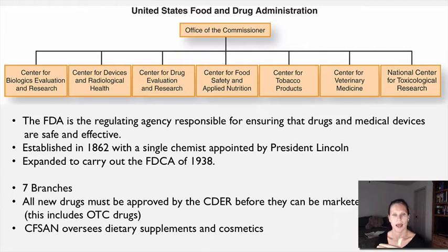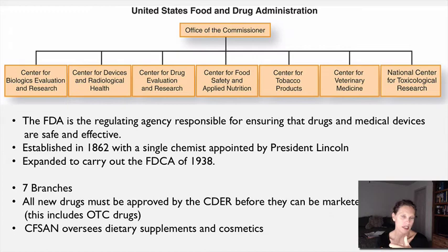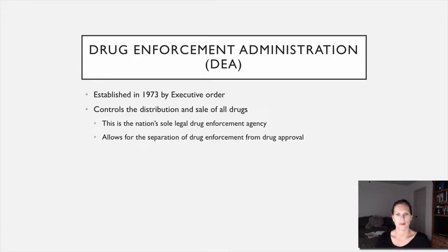CDER also decides whether a drug will be over-the-counter or prescription. The Attorney General places scheduled drugs on schedules one through five. There's also the Center for Food Safety and Applied Nutrition overseeing dietary supplements and cosmetics. The FDA is responsible for approving drug testing and for overseeing advertising of prescription drugs. The Drug Enforcement Administration, the DEA, is in charge of drug enforcement around controlled substances.